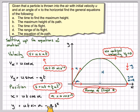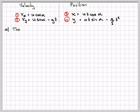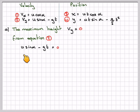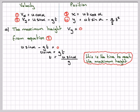There is gravity acting on y, and because gravity acts downwards, it's minus. We'll call those equations 1, 2, 3, and 4. For part (a), the time to maximum height: at maximum height, vy = 0. From equation 2, u·sin(alpha) − g·t = 0, so u·sin(alpha) = g·t, giving t = u·sin(alpha) / g. This is the time to reach the maximum height.